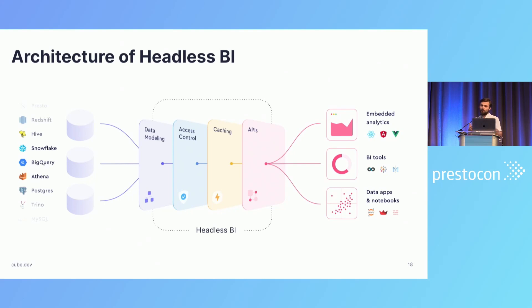We believe that there are four base pieces of headless BI architecture: data modeling, access control, caching, and APIs.